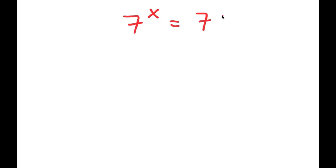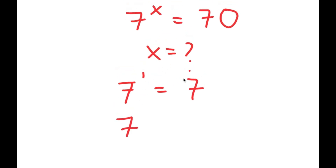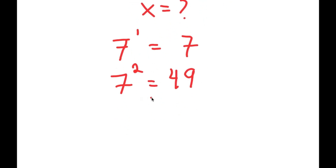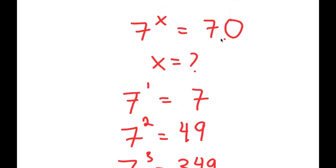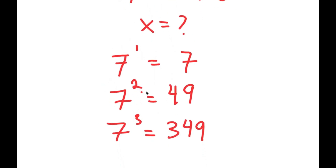In this video, I'm going to be solving the equation 7 to the power of x is equal to 70. Before we start on our solution, let's notice that this is an exponential equation, and x is an exponent, which is the variable we're solving for. Let's try to plug in a number. 7 to the power of 1 is equal to 7; 7 to the power of 2 is equal to 49; and 7 to the power of 3 is equal to 343. Notice how we're trying to find what value of x makes 7 to the power of x equal 70, but even x equals 3 results in a much higher number, meaning x is going to be a decimal somewhere in between 2 and 3.